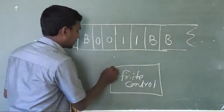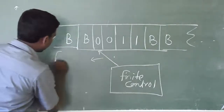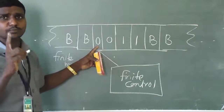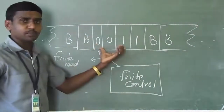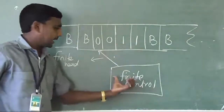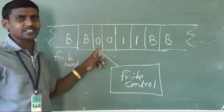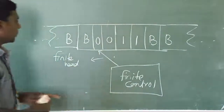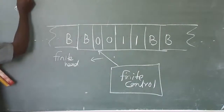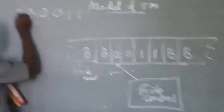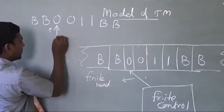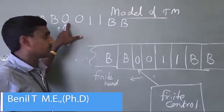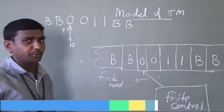The finite control has a finite head, which points to the first input symbol. This is the initial position of the Turing machine. The input is present inside the input tape, and the finite head points to the first input symbol — that is zero, for input zero zero one one. The initial state is q0, which points to the first symbol of the string w.